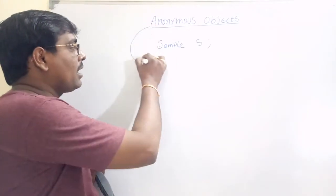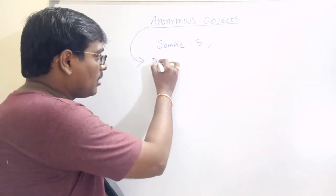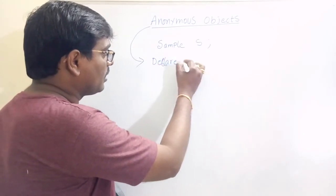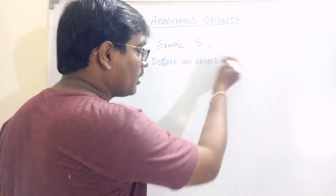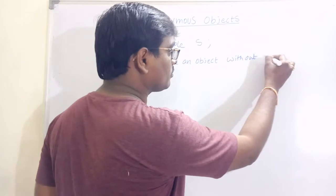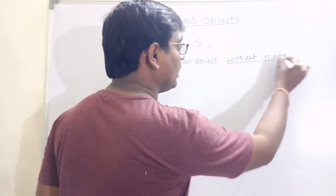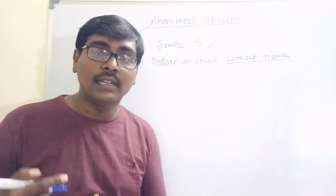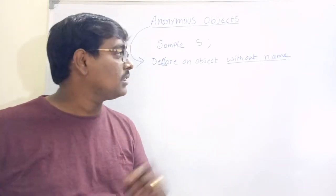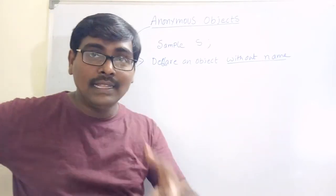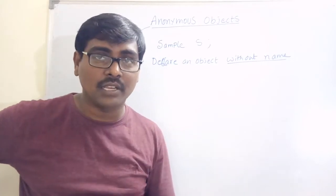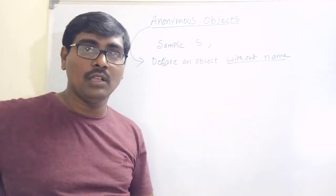What do you mean by anonymous object? Declare an object without a name — that is called an anonymous object. The contents of a class are created without using the name of the object.